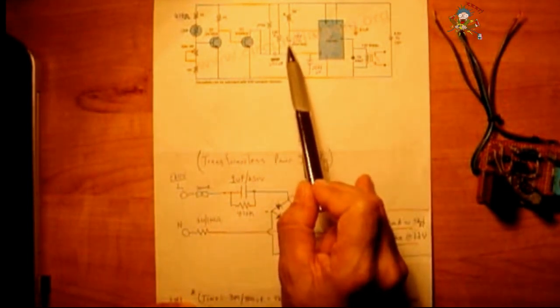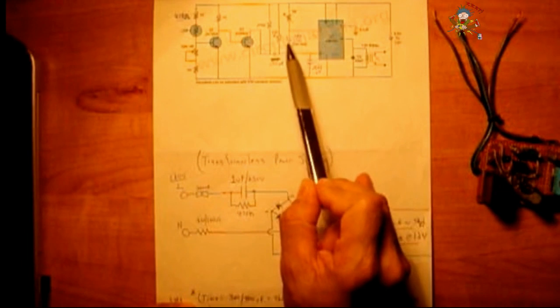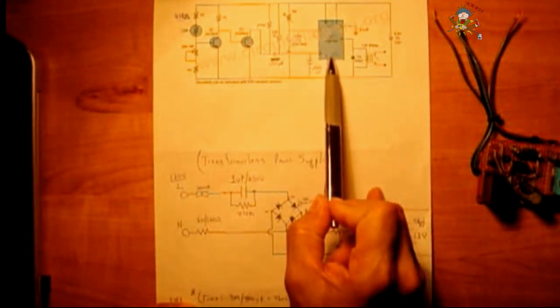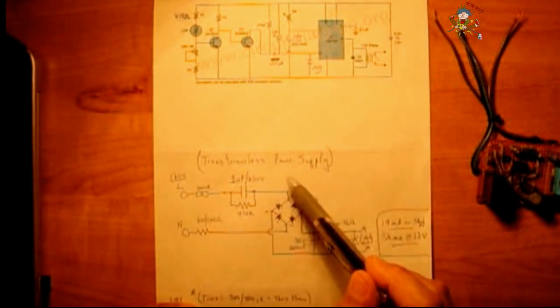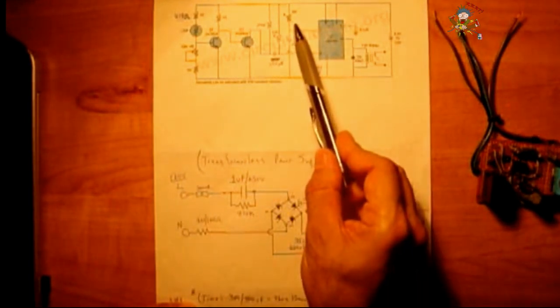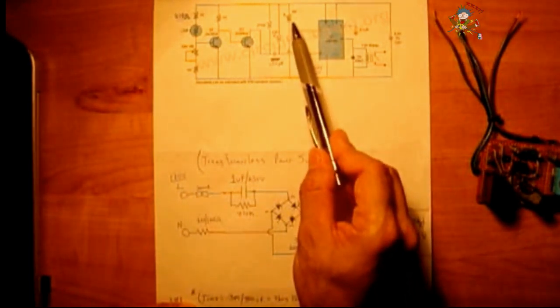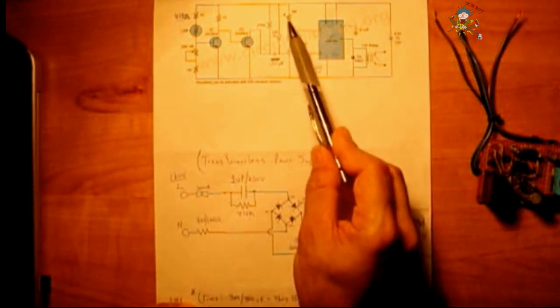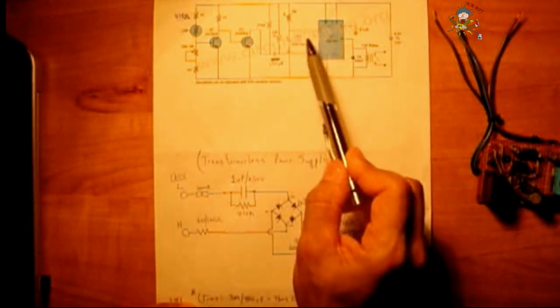These two components right here are extremely critical. These are what set the time delay in which your circuit will deactivate and turn your lights off. So I'm going to put the link in the video description area that will allow you to easily calculate this by inputting the different values for the resistor and capacitor.